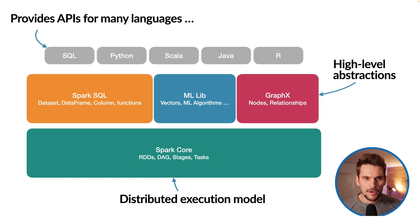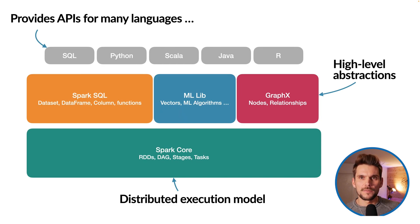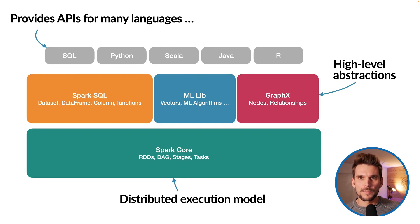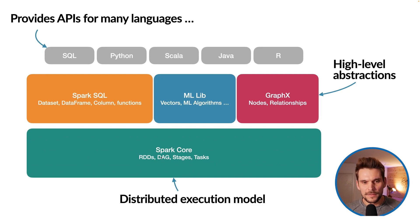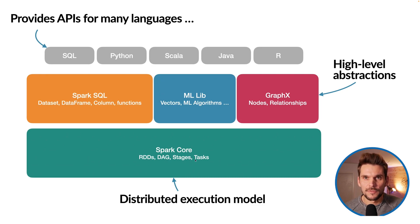Spark consists of many components and provides APIs for many languages — for example, we have an SQL API for Spark SQL, and then we have APIs for Python, Scala, Java, and R. Since Spark builds a logical internal representation, it doesn't matter which of these API languages you use. On the bottom, we have the distributed execution model implemented in Spark Core. There exist RDDs, the directed acyclic graph, stages, and tasks — everything Spark needs to execute tasks distributedly on a cluster.